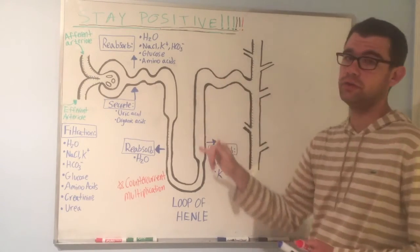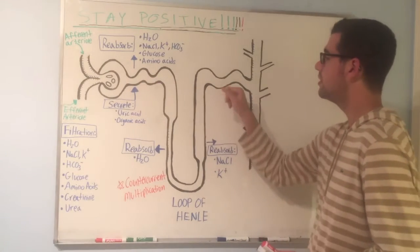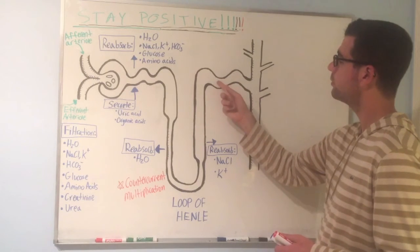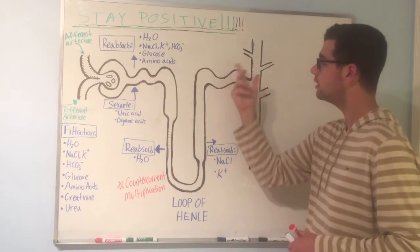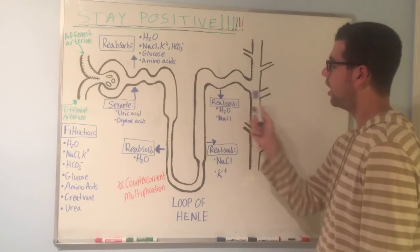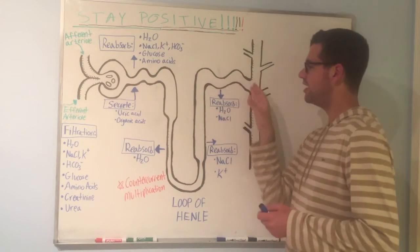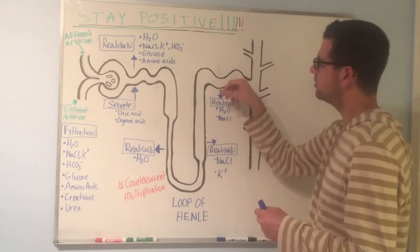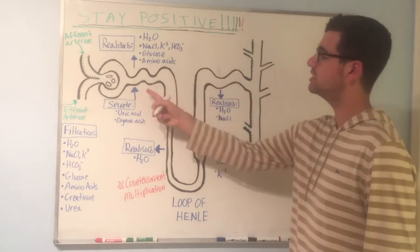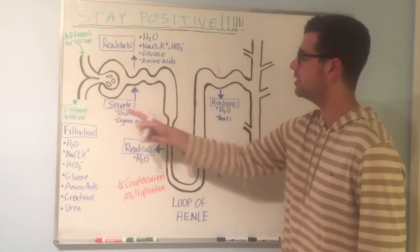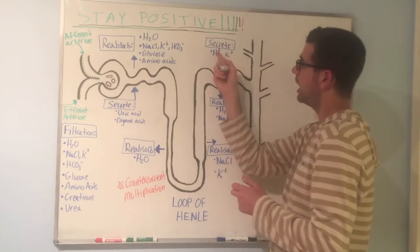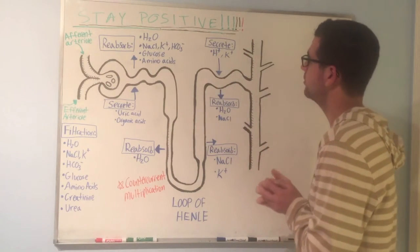Next in line comes the distal convoluted tubule. What happens here is we're going to be reabsorbing a little bit more sodium chloride and a little bit more water — you can almost think of it as putting some of the finishing touches on the filtrate. Another thing that happens at the distal convoluted tubule is a secretion step, just like at the proximal convoluted tubule. This time, there will be secretion of hydrogen ions and potassium ions.